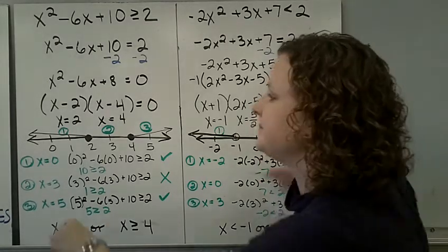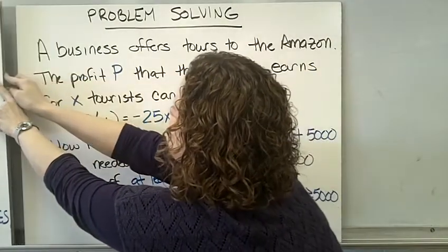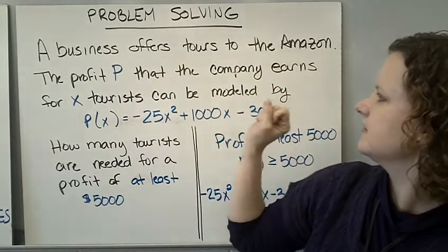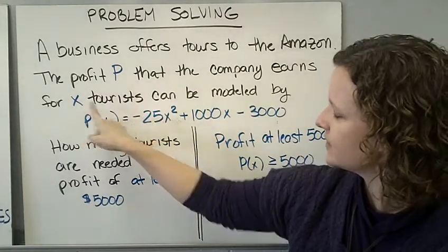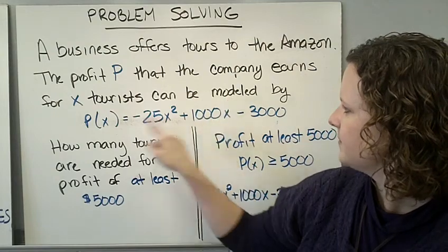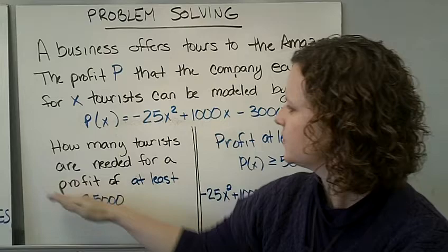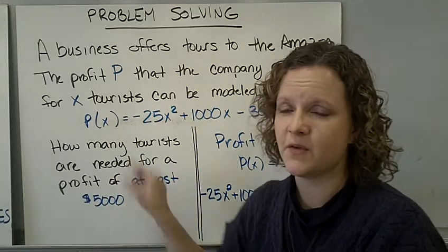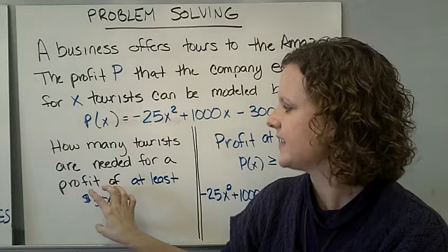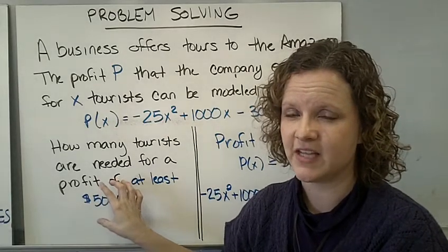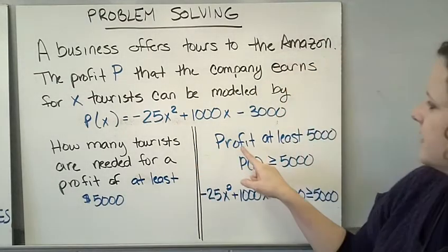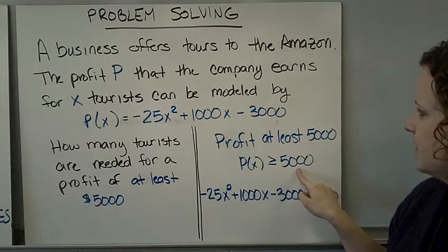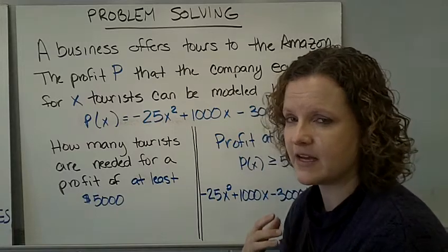Let's try one word problem. Problem solving. Alright. A business offers tours to the Amazon. The profit P that the company earns for x tourists can be modeled by our equation. How many tourists are needed for a profit of at least $5,000? At this point, you have an equation modeling the profit, and how much profit you need. Now you just have to decide which inequality you're going to use. I've written profit of at least $5,000, so your modeling equation has to be greater than or equal to $5,000. If the profit isn't greater than $5,000, they're not going to go on the tour.